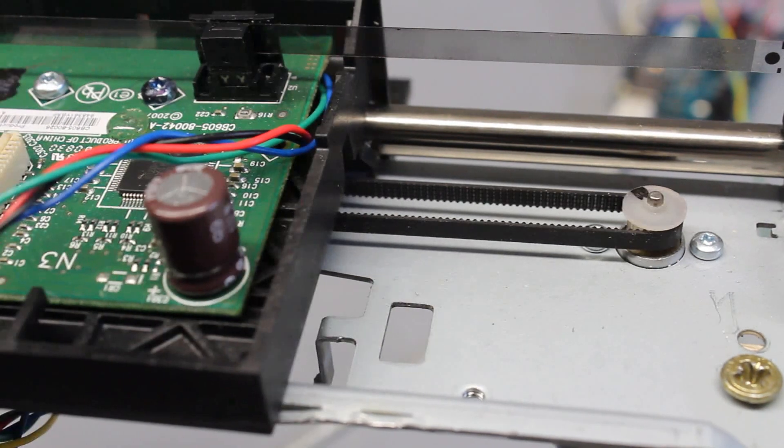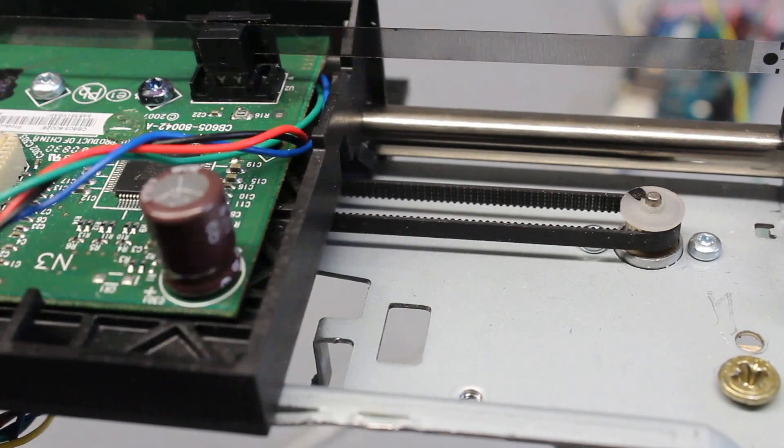A brushed DC motor pulls the carriage along the round guide bar using a toothed belt.